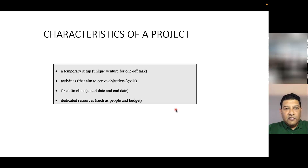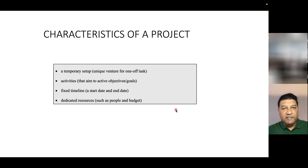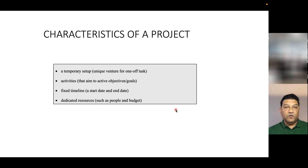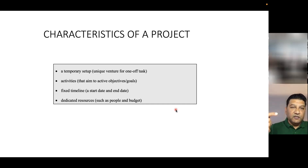A characteristic of a project is that it is a temporary setup. You come together as a team for a unique venture, which is a one-off task. You need to understand the activities that aim to achieve the objective or goals. A project has a fixed timeline — a start date and end date — and dedicated resources. For your assignment, the dedicated resources are the four or five people in your group, and you need to assign which person is performing which task.